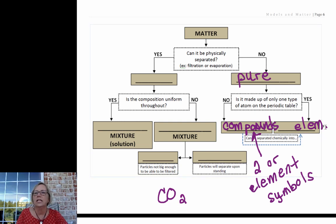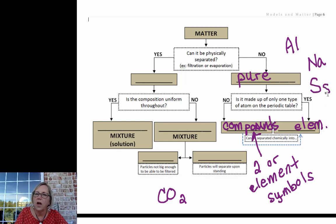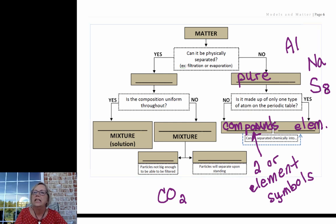An element on the other hand just needs one: aluminum, sodium, sulfur. Sulfur is often found in a cluster of eight sulfurs bonded together. This would still be considered an element. There's a single element symbol representing that substance.